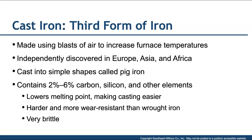The third form of iron was cast iron. Blasts of air were used to increase furnace temperature and get the metal hotter. This was independently discovered in Europe, Asia, and Africa — historians say around the same time. It was cast into simple shapes called pig iron, which contains 2 to 6 percent carbon. You also get an increase of silicon and other elements in cast iron, giving it a lower melting point and making the casting process easier. It is harder and more wear resistant than wrought iron, but at the same time it is also very brittle.